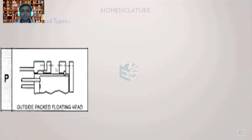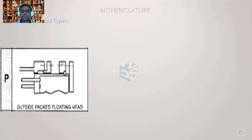The flange here is a loose type — it can slide from left to right. The split ring acts as a stopper, so this flange cannot move beyond that point. This flange will be locked at this location.